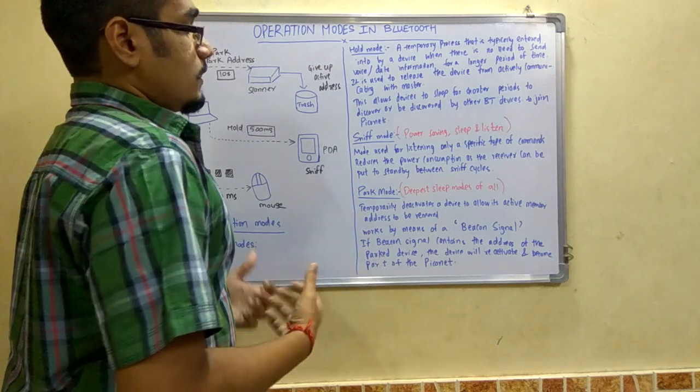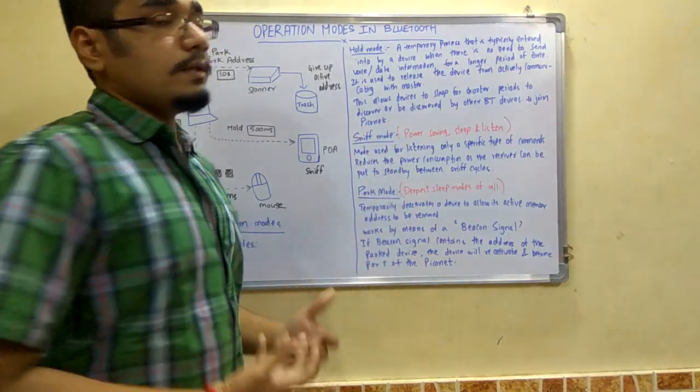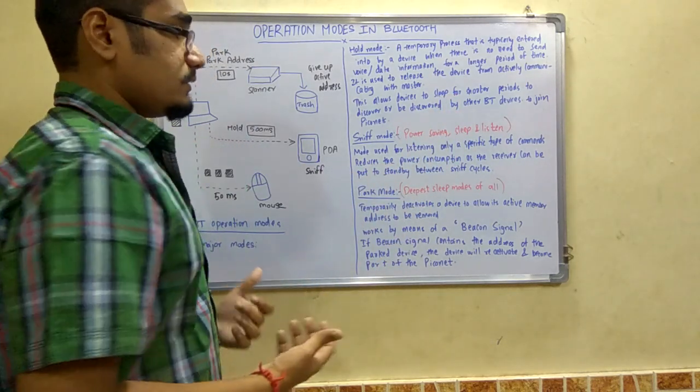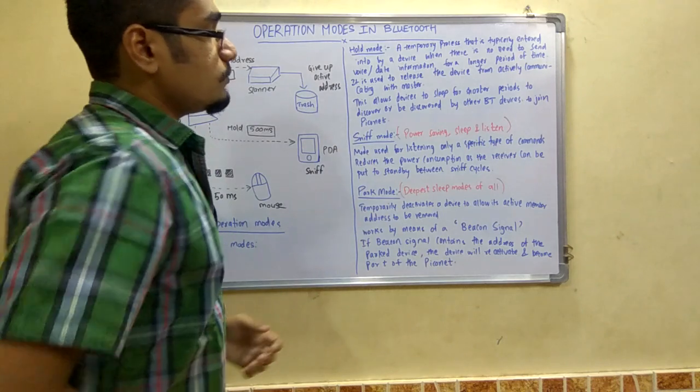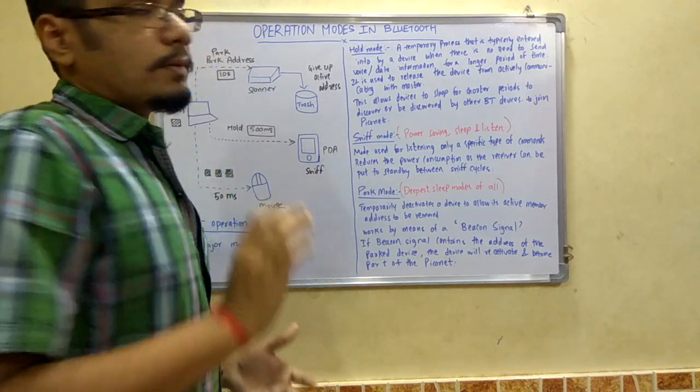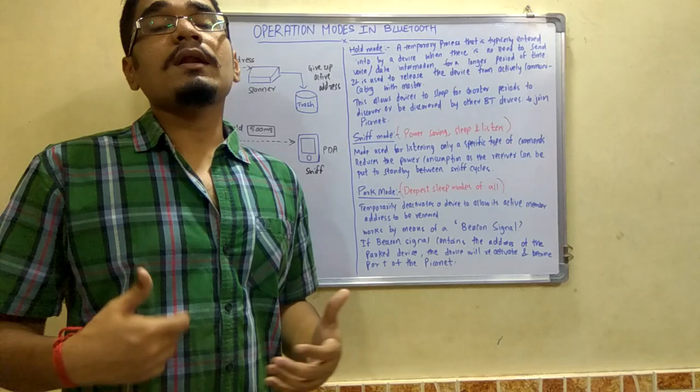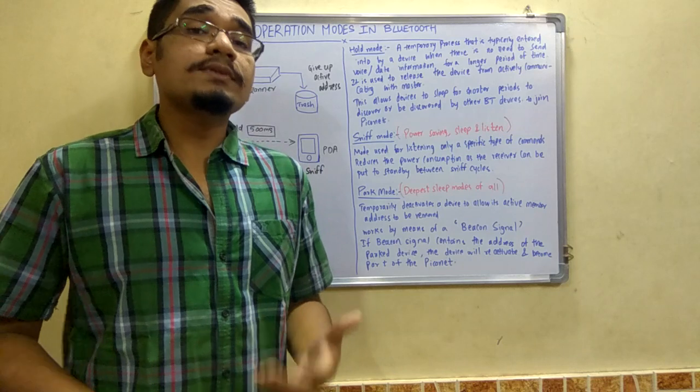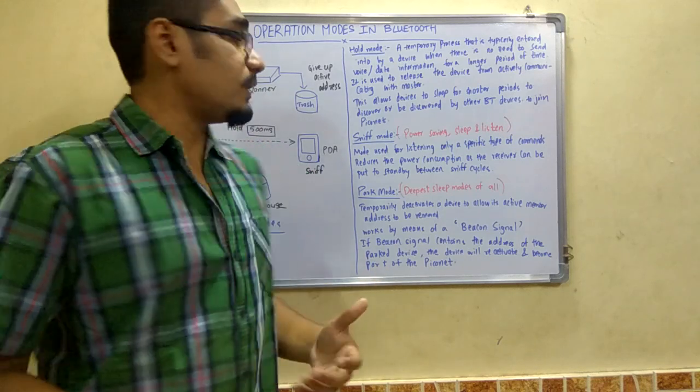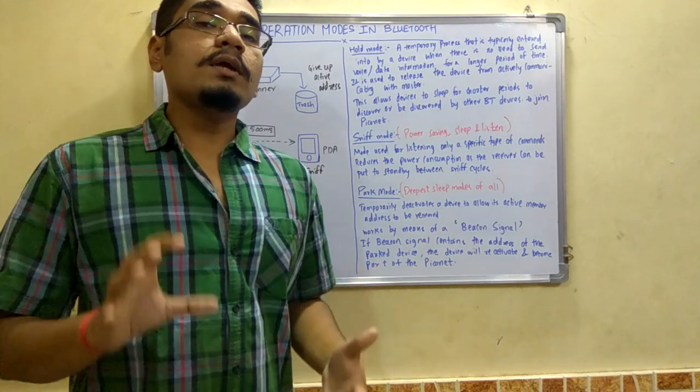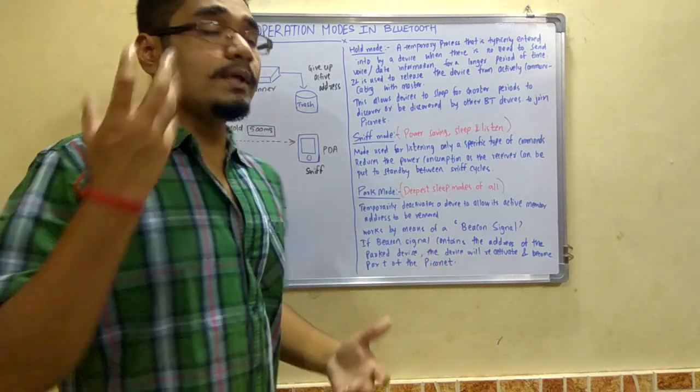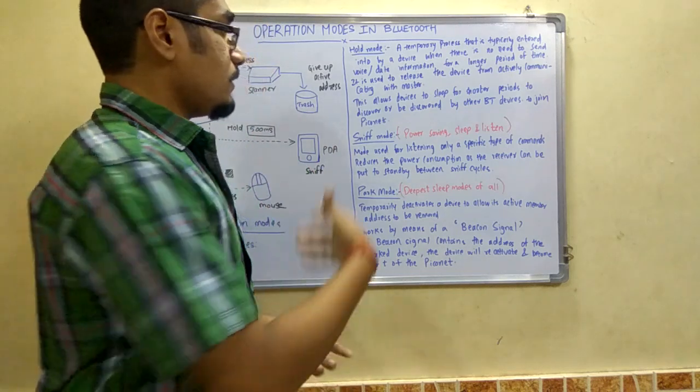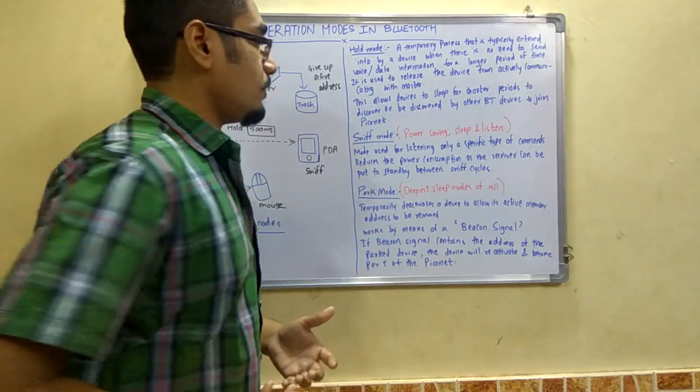Next is sniff mode. Sniff mode is a power-saving mode and it will sleep as well as listen. This mode is used for listening only to specific types of commands. In Bluetooth operation there are many types of signals that are going to take place, so sniff mode is particularly used to hear specific kinds or high-alert commands.